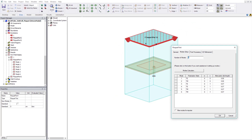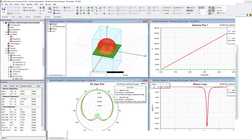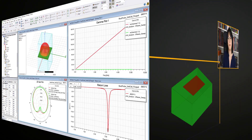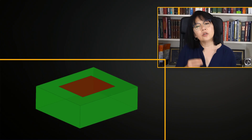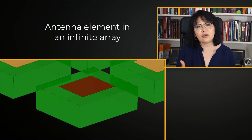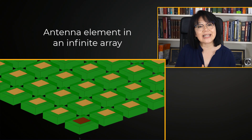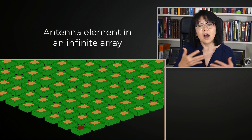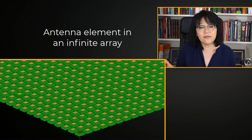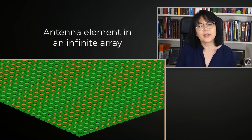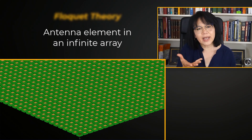Like the wave port, the Floquet port provides the propagation constant and the S-matrix data. In order to understand an antenna array's behavior, it's necessary to understand the antenna's behavior in an infinite array — and that's where Floquet theory comes into play.